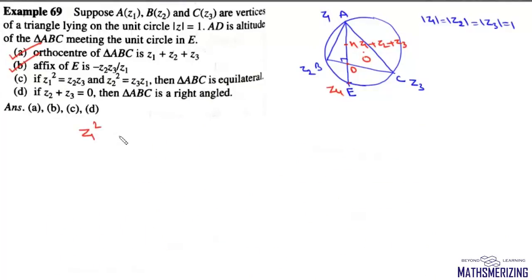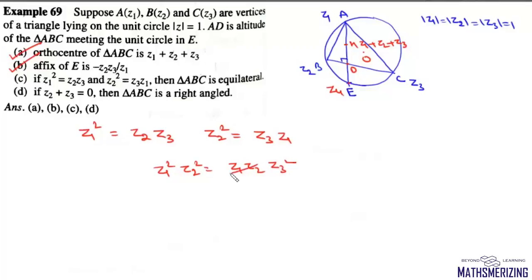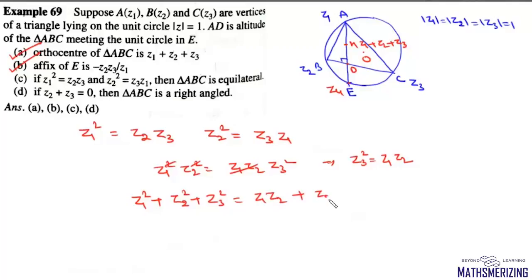For option C: if Z1² = Z2Z3 and Z2² = Z3Z1, then triangle ABC is equilateral. Multiplying these two equations gives Z1²Z2² = Z1Z2Z3², and cancelling Z1Z2 we get Z3² = Z1Z2. Adding all three relations: Z1² + Z2² + Z3² = Z1Z2 + Z2Z3 + Z3Z1, which is the condition for an equilateral triangle. So option C is also correct.